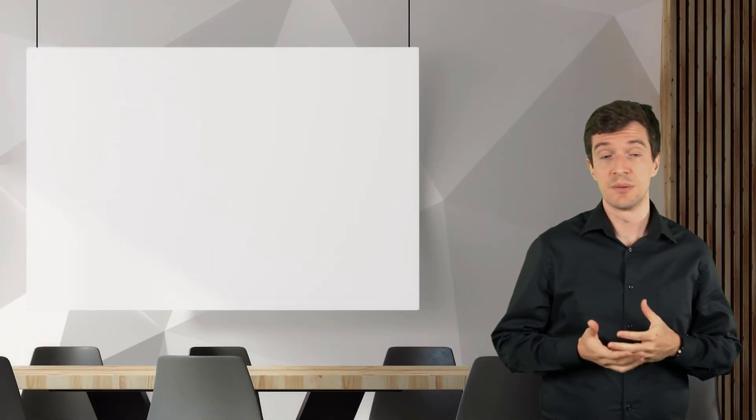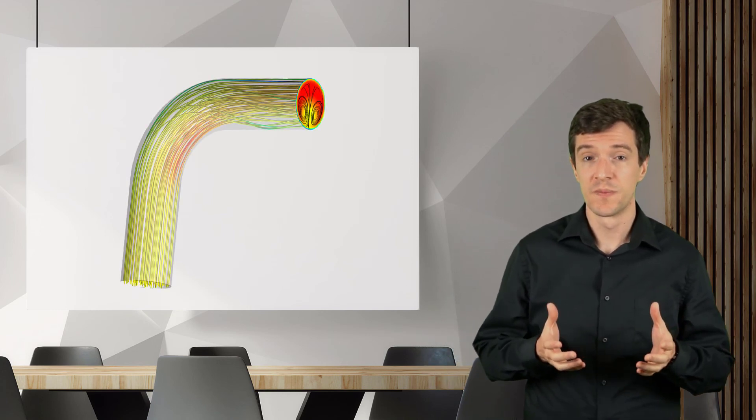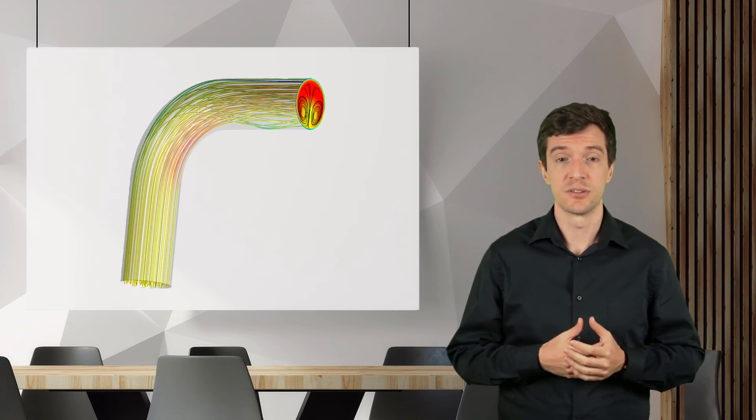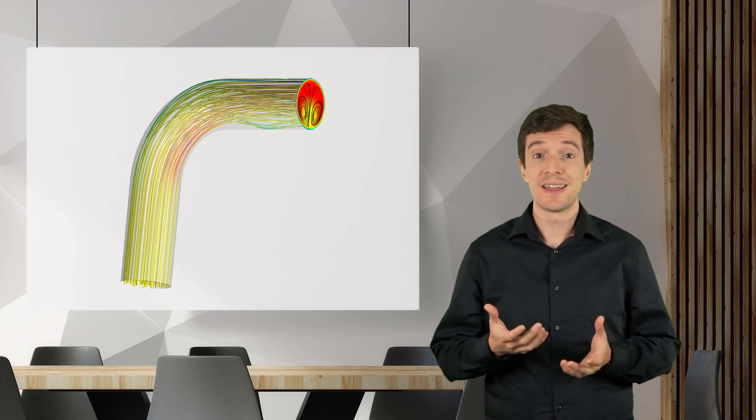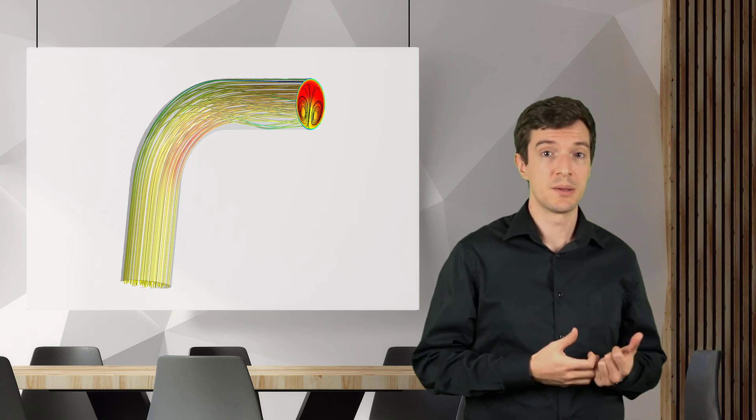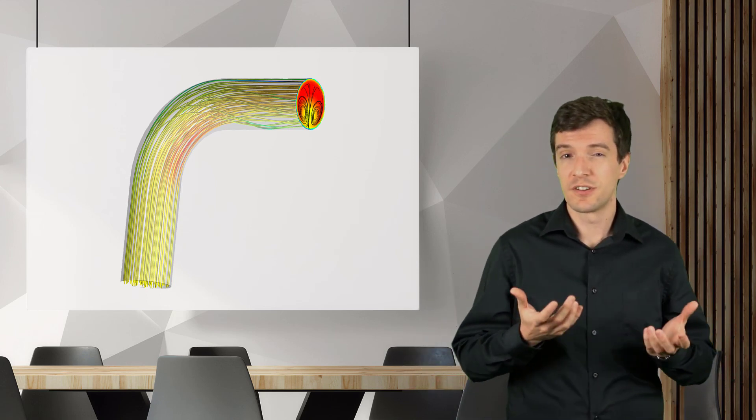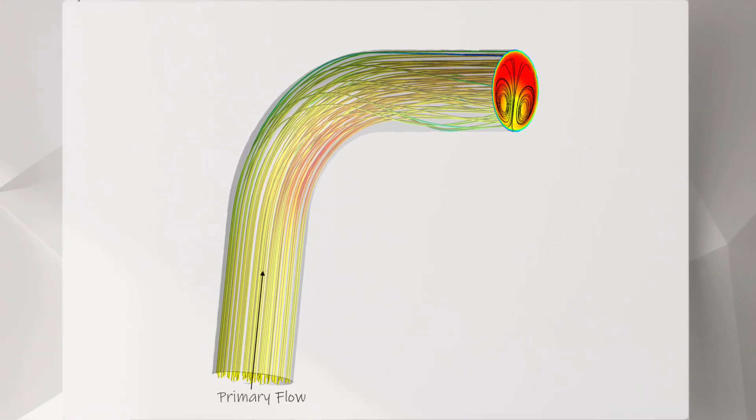A component that is largely used in pipe fittings is the bend. Bends allow the flow to change the direction and avoid obstacles. However, they add additional head losses compared to simple straight pipes, due to different phenomena.